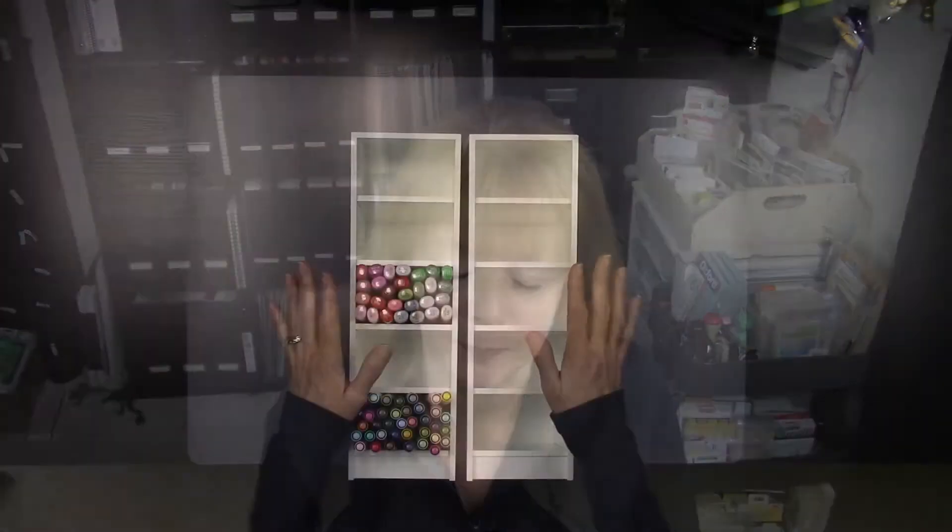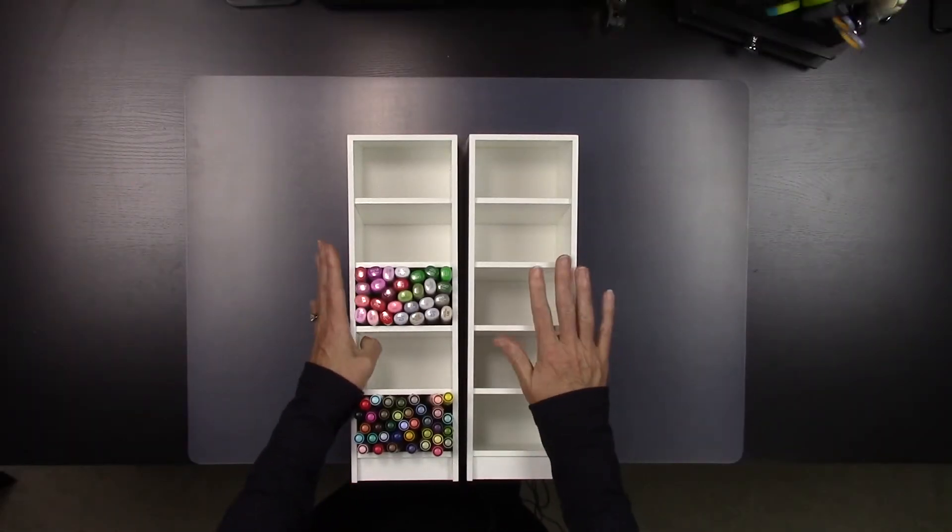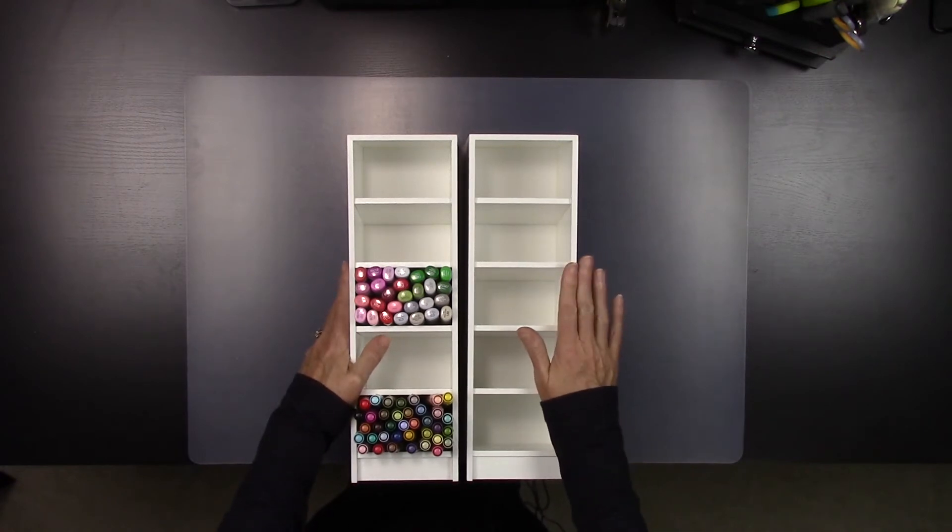So we are going to start out with our first official product and that is the Color Cubbies from Studio 3 Solutions. What you are going to see here are two examples of the Color Cubbies, one with some product already in it, one without.